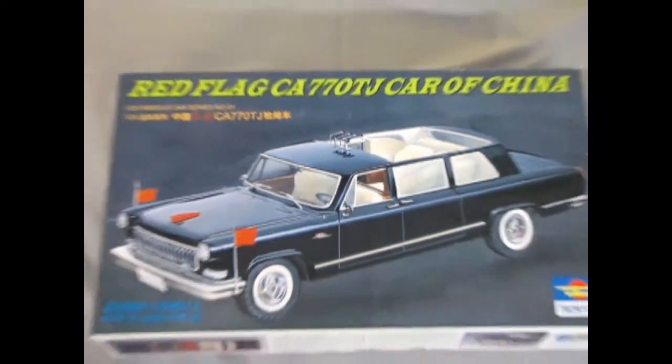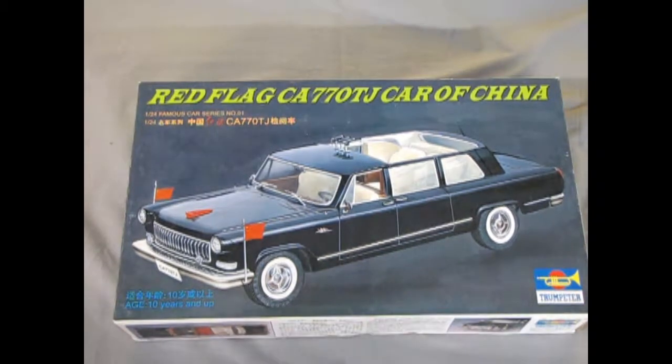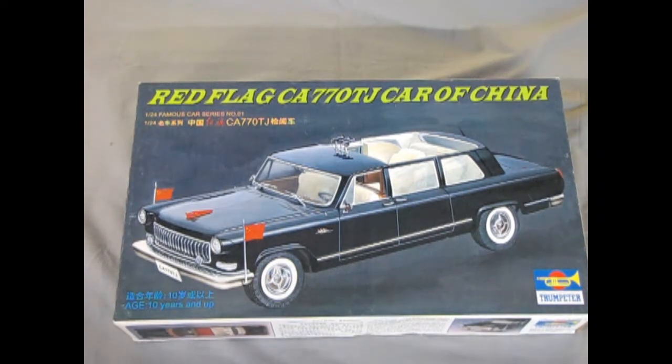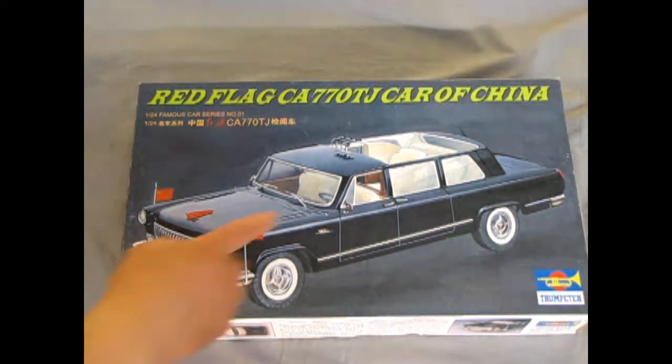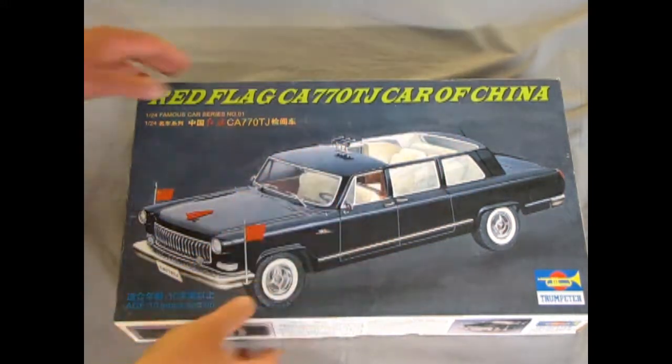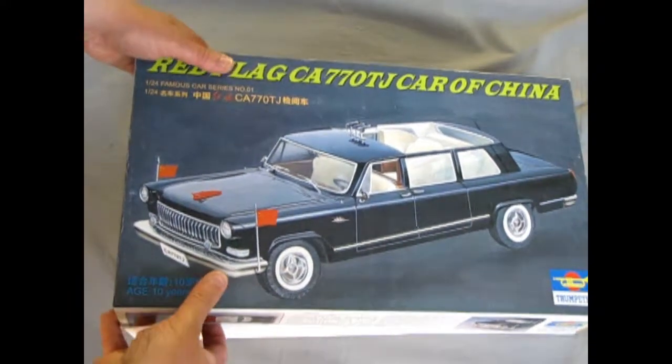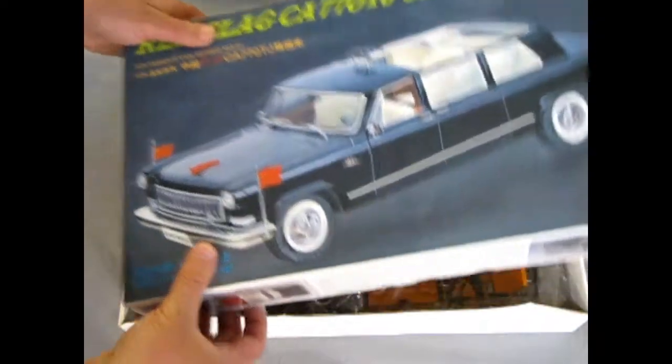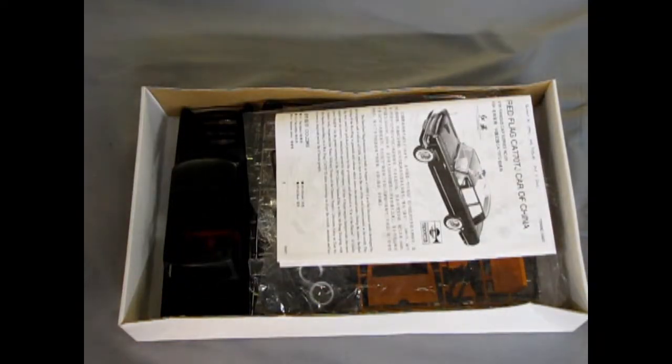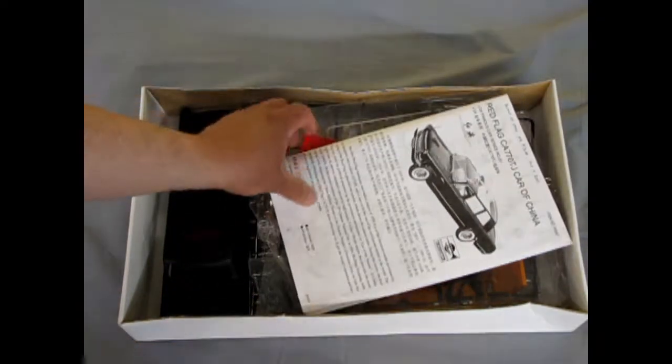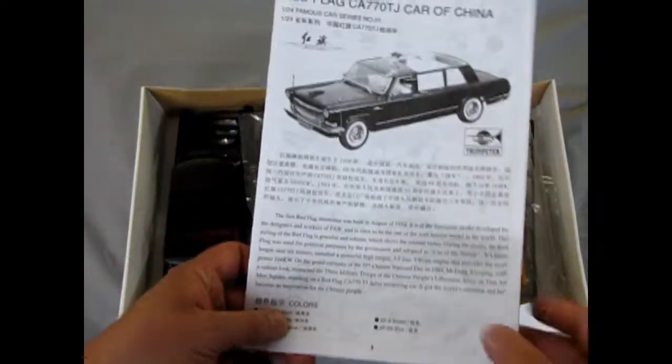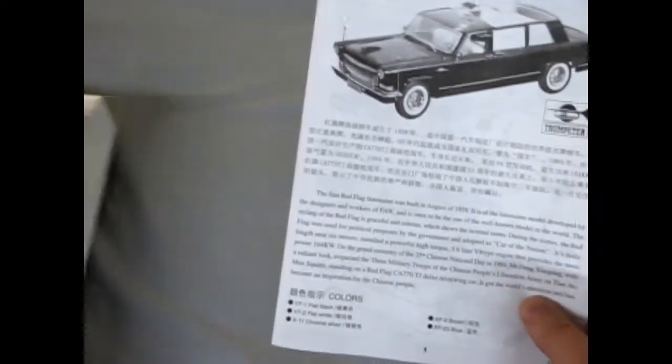Welcome back again down to our bench to view the Red Flag CA-770TJ car of China. What makes this different from the limo we've seen previously is that this has the open roof and the microphones for the government official to make the speech in his car. So we will just open up the box now. This was one that I started to work on, but that's okay because I didn't do too much to her.